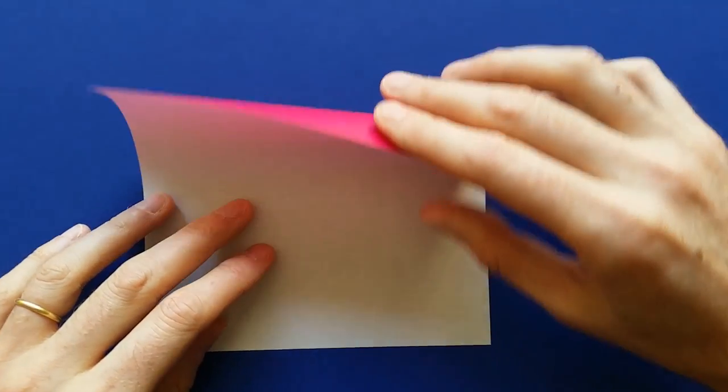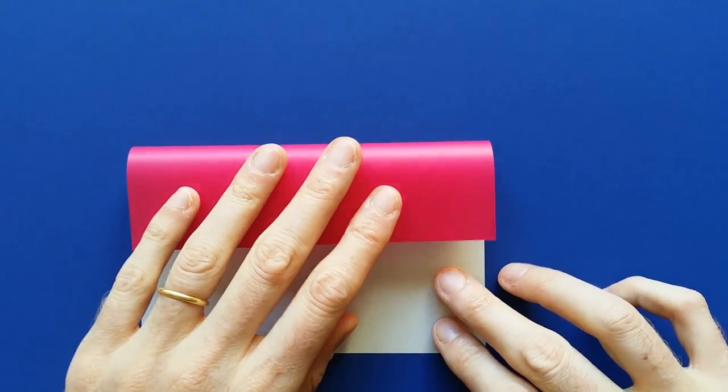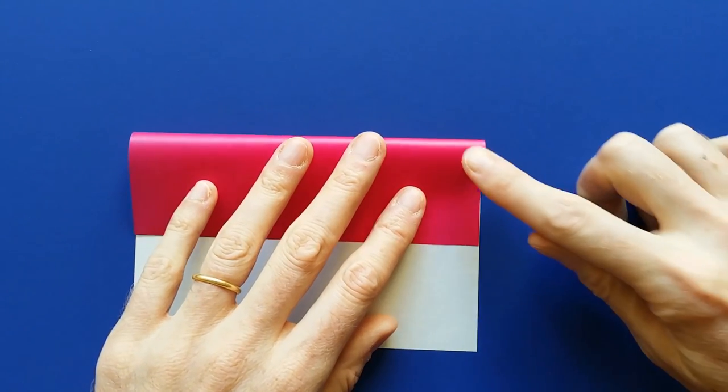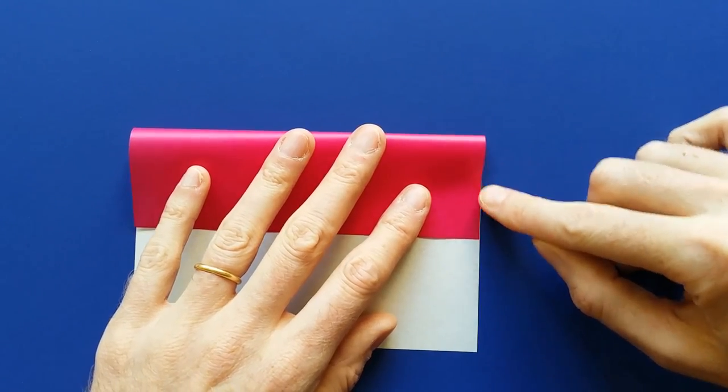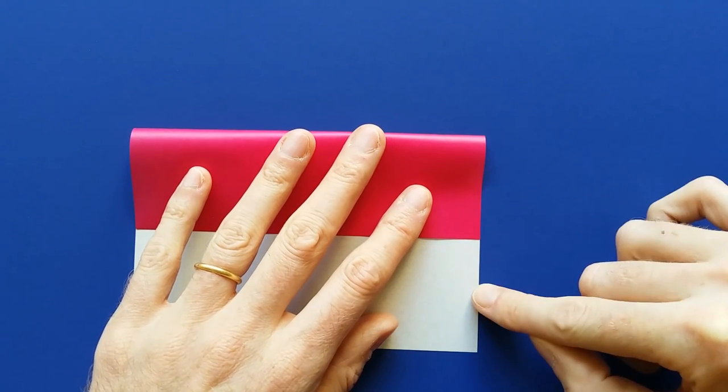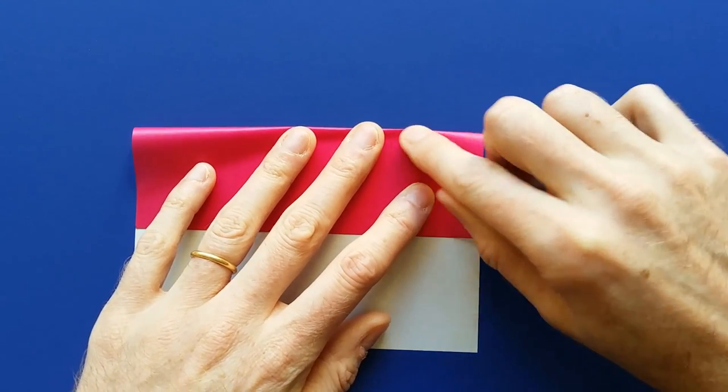Then we'll make a horizontal fold at about one third. And actually, we are going to make it at a little bit less than a third, so this colored part should be a little bit smaller than the white part here. And mark the fold.